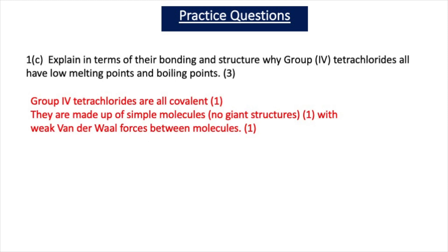Question 1C asks you to explain, in terms of their bonding and structure, why group 4 tetrachlorides all have low melting points and boiling points — a three mark question. Group 4 tetrachlorides are all covalent (one mark); they're made up of simple molecules with no giant structures (one mark); with weak van der Waal forces between the molecules (one mark for the third mark).